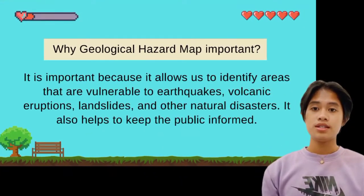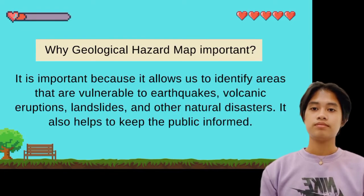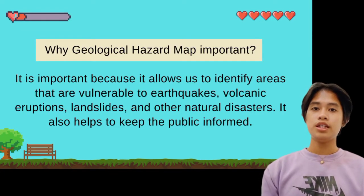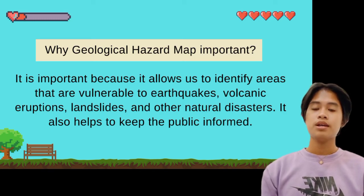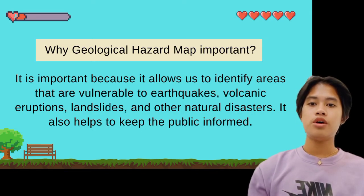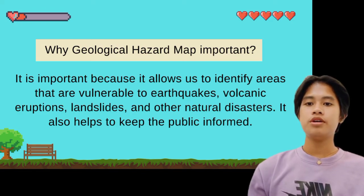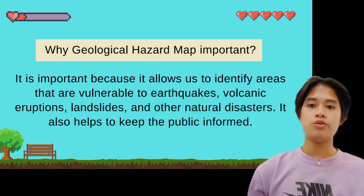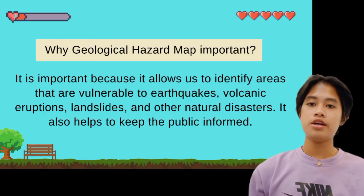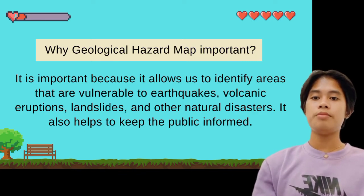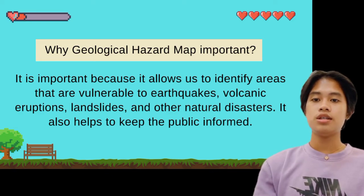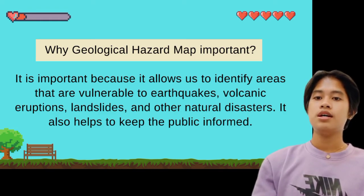Why is a Geological Hazard Map important? It is important because it allows us to identify areas that are vulnerable to earthquakes, volcanic eruptions, landslides, and other natural disasters. It also helps keep the public informed. If you are going somewhere, you are aware of any potential disasters and can be prepared. Because the map indicates areas ranging from high to low risk, residents will know if their area is at high risk to various disasters. For example, if an area is prone to typhoons, residents and authorities will have an opportunity to prepare for evacuation as soon as possible.